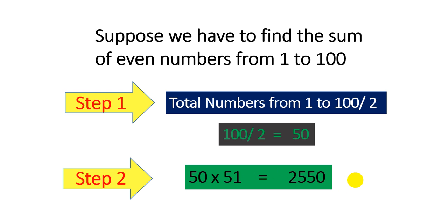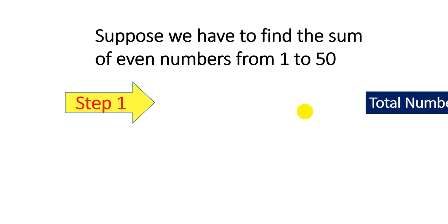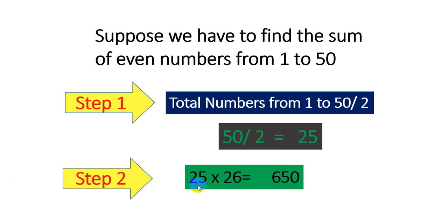That is the sum of all the even numbers from 1 to 100. Take another example. Suppose we have to find the sum of even numbers from 1 to 50. So in the first step we calculate the total numbers from 1 to 50. Of course it is 50 and that we divide by 2.